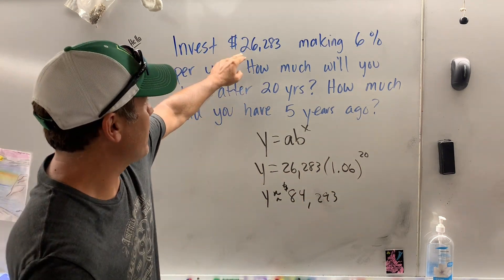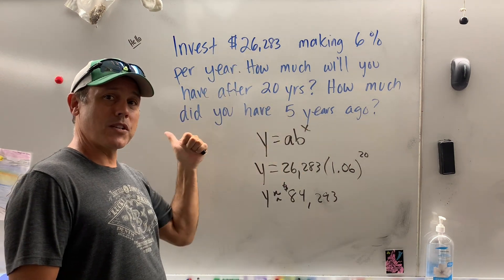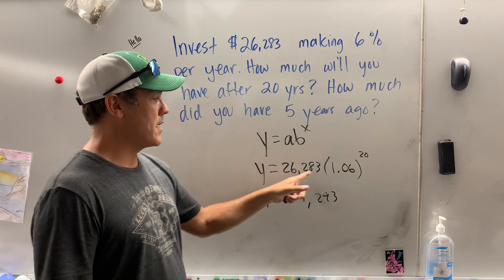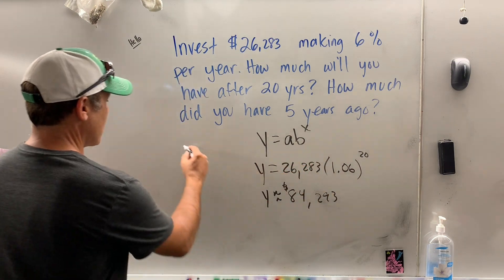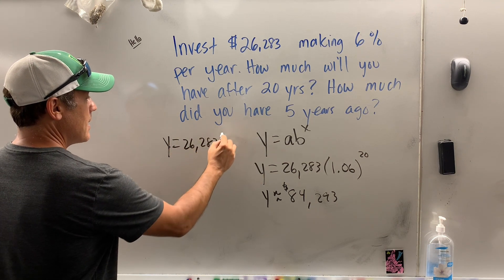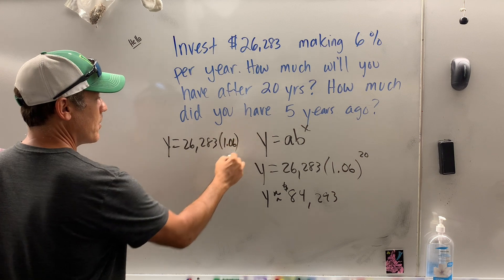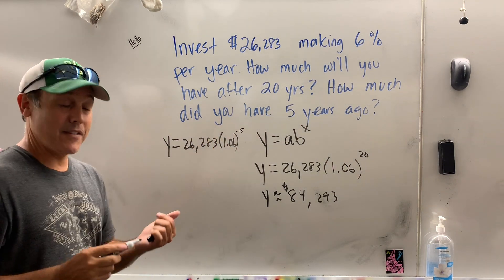Now that's if you have this right now, but the next question is, how much did you have 5 years ago? Now a lot of kids want to mess around with the multiplier. Don't do that. To do 5 years ago, well, if right now you currently have 26,283, the multiplier is still 1.06, but 5 years ago, you raised it to the negative 5.